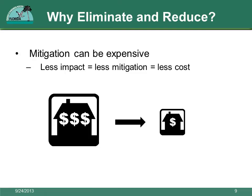Mitigation is another reason to eliminate and reduce impacts. Mitigation can be expensive. Generally, the larger the wetland impact, the more mitigation you will need and the more money it will cost. Alternatively, smaller impacts require less mitigation, which costs less money.